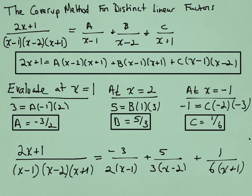To find C, I'm now going to look at the factor that C corresponds to, cover it up, plug in the number that makes that factor 0, in this case minus 1, plug it into the rest of the rational expression, and when you do that, you get 1 sixth.